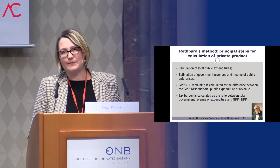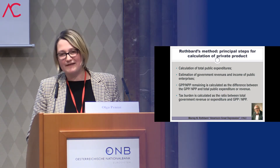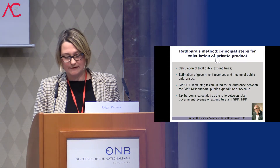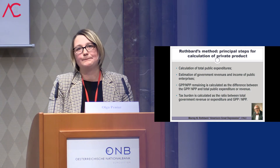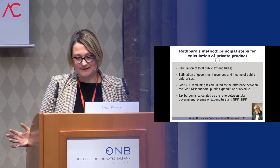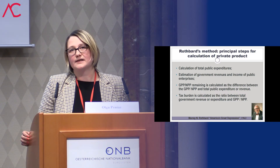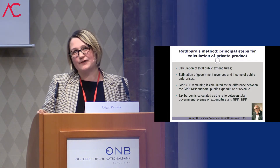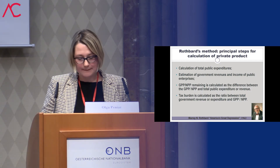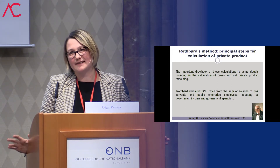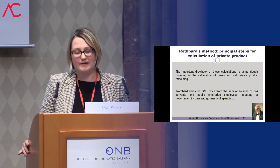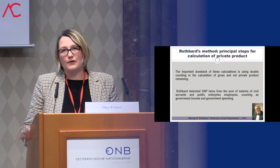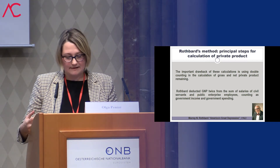The results obtained by Rothbard reveal the decline of private product in the United States during the Great Depression, and also the increase of tax burden during that period. However, Rothbard's method has some imperfections — the main one is double calculation. He deducted the sum of government sector salaries from gross national product twice. Today the government sector is so big that we can obtain a negative result if we apply this method to, for example, French macroeconomic data. So Rothbard's method needs to be re-evaluated and corrected for current macroeconomic data.